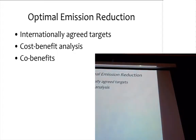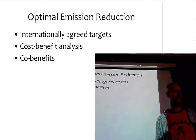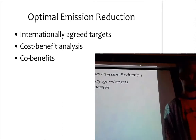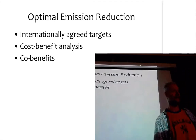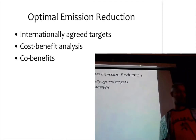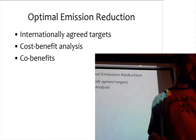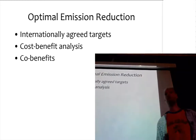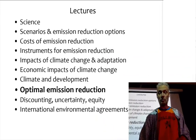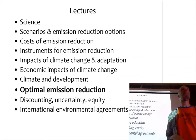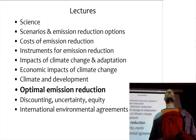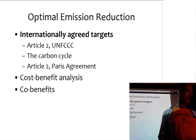We're going to speak for the next three weeks about optimal emission reduction, and we're going to start today in three parts. I'm going to talk about the internationally agreed targets — there's more of that in the book — I'm going to talk about cost-benefit analysis, I'm going to talk about co-benefits, and I'm also going to make a start with discounting, so that I have more time next week to delve into uncertainty, equity.